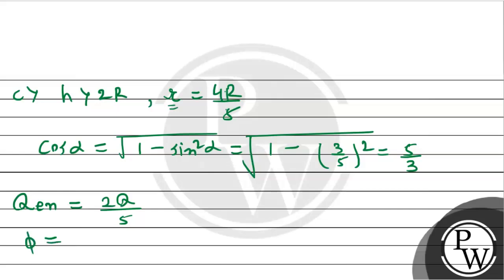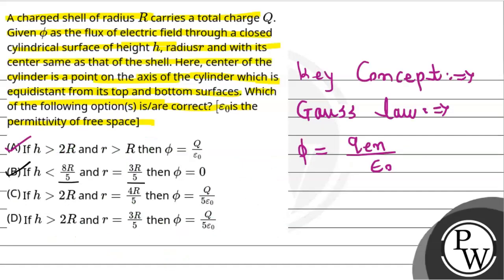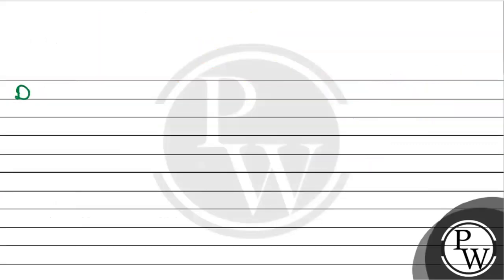The flux for this condition equals charge enclosed divided by epsilon naught. So this becomes 2Q divided by 5 epsilon naught. Checking Option C: it states 2Q by 5 epsilon naught with r equals 3R/5. However, our calculation used r = 4R/5 to get 2Q/5ε₀, so the condition given in Option C uses mismatched values.